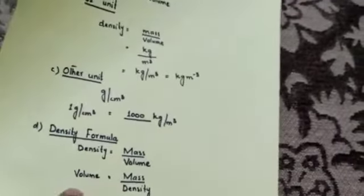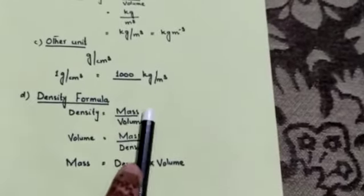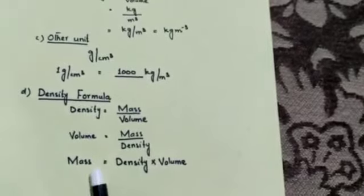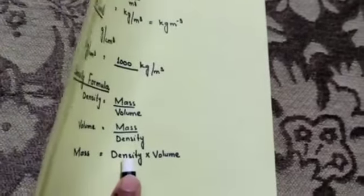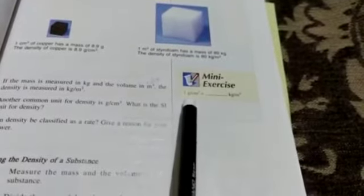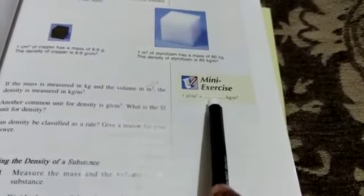This is the second formula, through which we can find the volume of a substance. Next, if we want to find the mass, we multiply volume by density — so mass is equal to density multiplied by volume. There is also a mini exercise on page number 47: 1 gram per centimeter cube is equal to how many kilogram per meter cube? The answer is 1 gram per centimeter cube equals 1000 kilogram per meter cube.